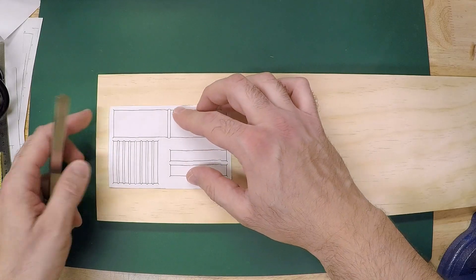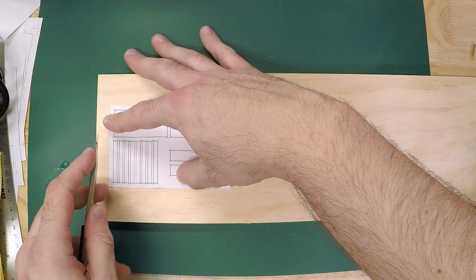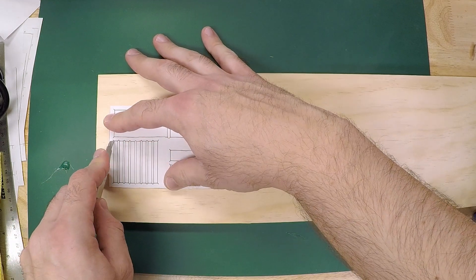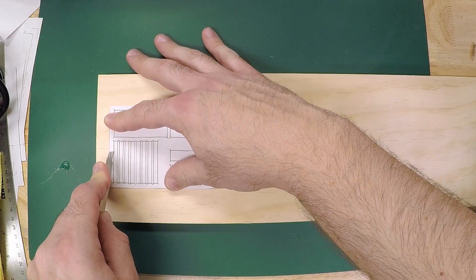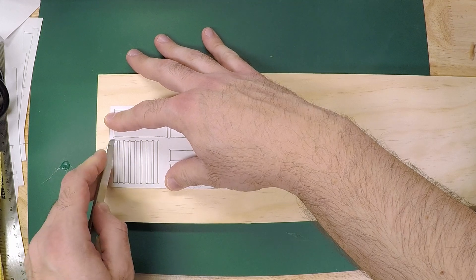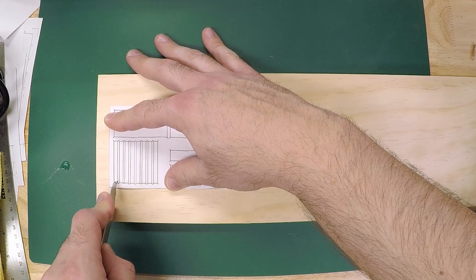So here I'm using a small utility knife, you can use a hobby knife like an exacto knife, and I'm just holding my template on there. And the goal is to really just score down the wood just so I have some guidelines on there.